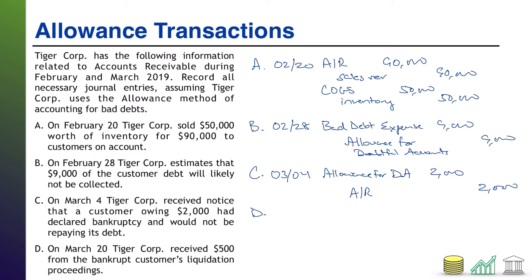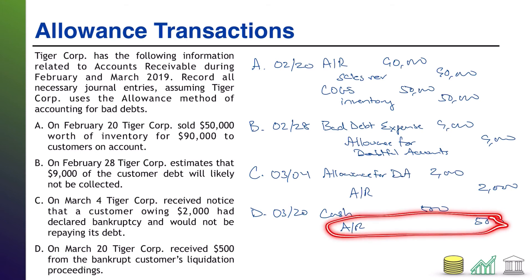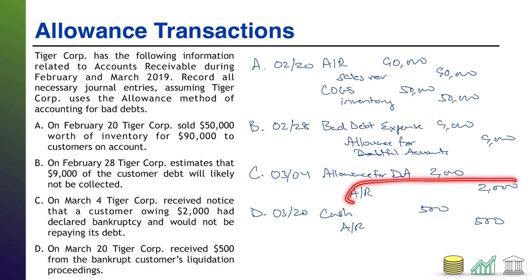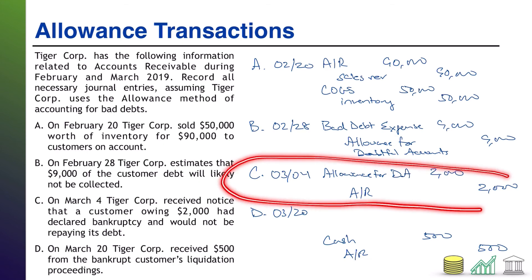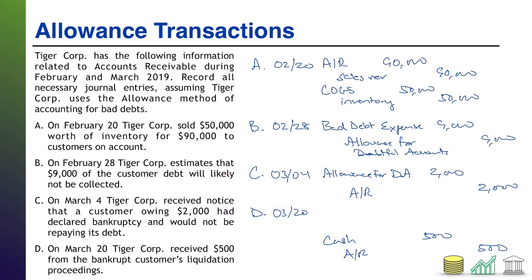On March 20th, TigerCore received $500 from the bankrupt customer's liquidation proceedings. We're getting money for a receivable we already wrote off. If we had simply been paid on a normal receivable, the entry would be debit cash $500, credit AR $500. However, this AR is not on our books anymore because we removed it in Part C. So before we can collect the cash, we must first put the AR back on the books by reversing the write-off for the portion that will now be collected.